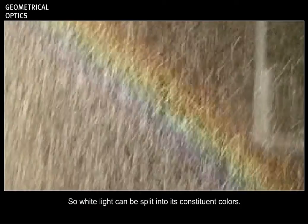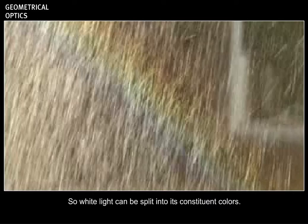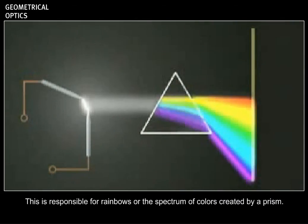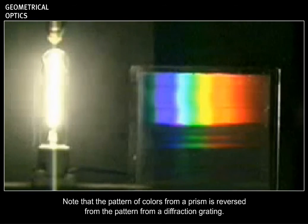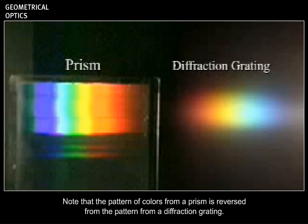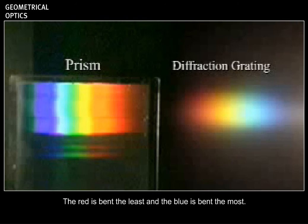So white light can be split into its constituent colors. This is responsible for rainbows or the spectrum of colors created by a prism. Note that the pattern of colors from a prism is reversed from the pattern from a diffraction grating. The red is bent the least and the blue is bent the most.